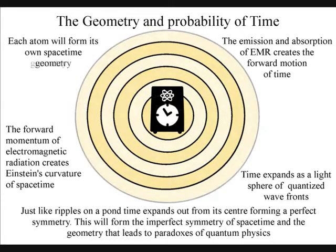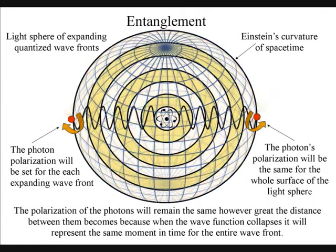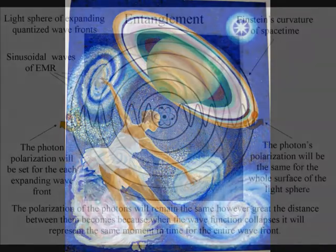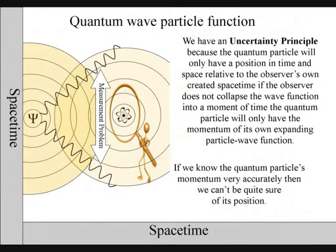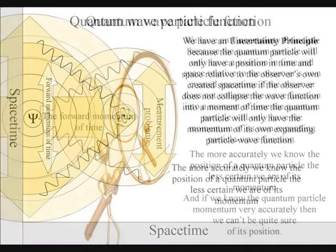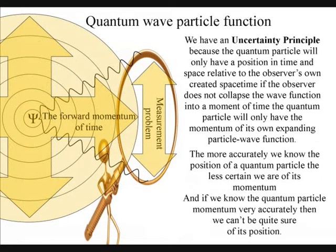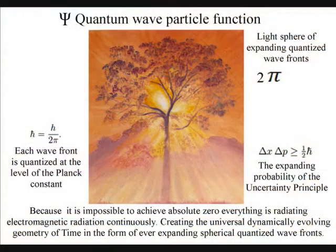We know time is a variable because we have time dilation. In quantum atom theory, the variable of time is the hidden variable that can explain the paradoxes of quantum mechanics. The time dilation in the twin paradox will be visible at the quantum level of the atoms as the measurement problem of quantum physics. The more accurately we know the position of a quantum particle, the less certain we are of its momentum, and if we know its momentum very accurately, then we cannot be quite sure where it is. This is because momentum is frame-dependent, and light has momentum. Therefore, each photon-electron coupling will be at the centre of its own reference frame.